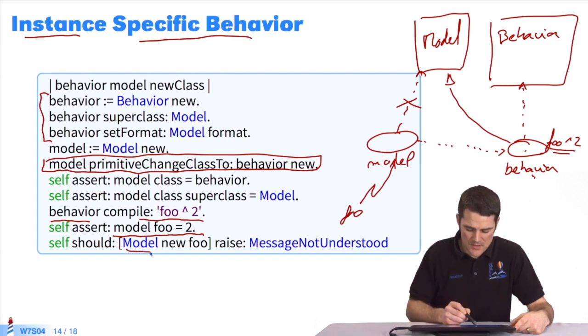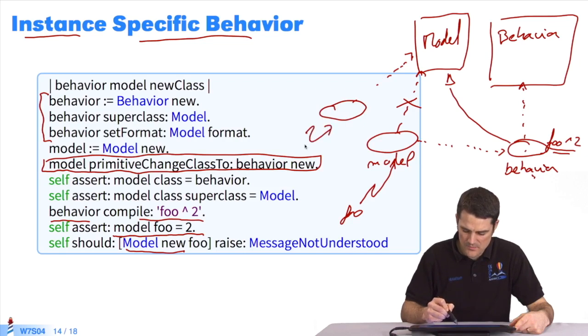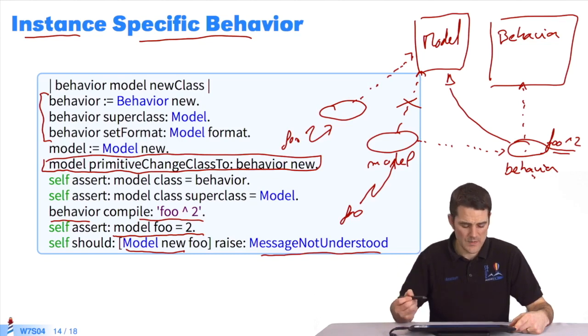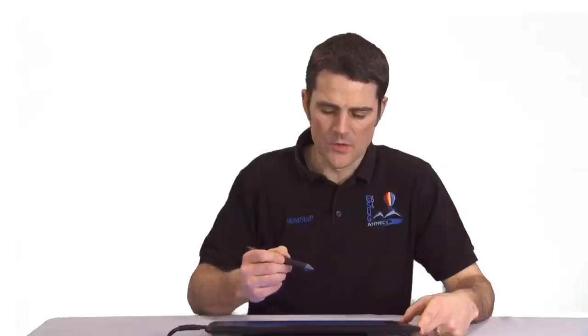But if I create a new instance of model class, like this, and I send the message foo, an error is indicated by message not understood. Because if I apply to lookup, I look in the object's class, model class, but I don't find the foo method in its dictionary or its superclasses.